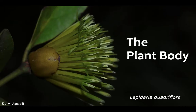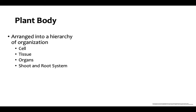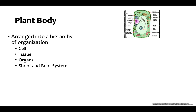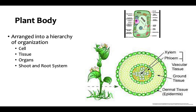In a typical terrestrial plant, a shoot and a root system is exemplified. The shoot and root system are composed of different organs functioning together. From these organs, they are composed of different tissues acting synergistically, and from these tissues there are specialized cells. Thus, the plant body is arranged into a hierarchy.